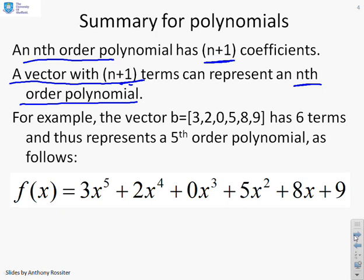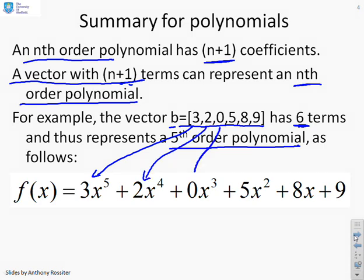So I've got an example here for you. You can see I've used this vector and I've defined it as 3, 2, 0, 5, 8 and 9. And that has 6 terms and therefore that can represent a 5th order polynomial. And you'll see I've marked down what that polynomial is here. You can see the 3 is the maximum power, 3x^5, the 2 is the next one, 2x^4, 0 goes on the x cubed, 5 on the x squared, 8 on the x and the last one is the constant.